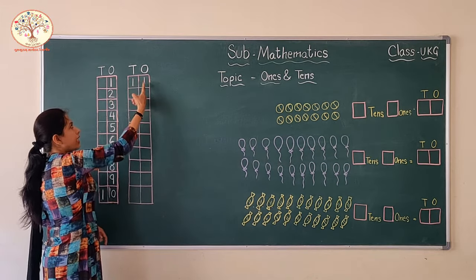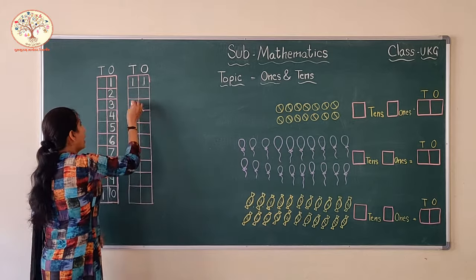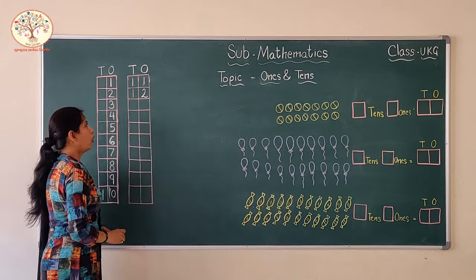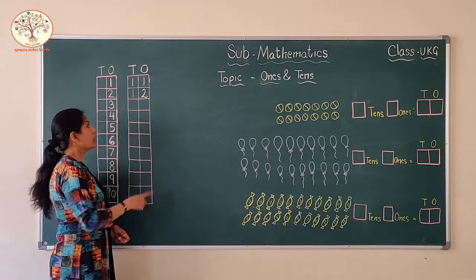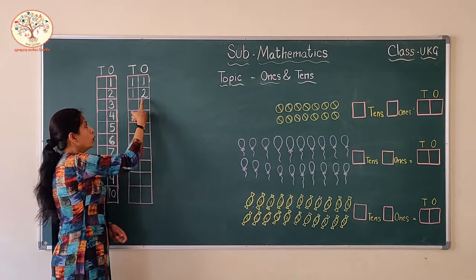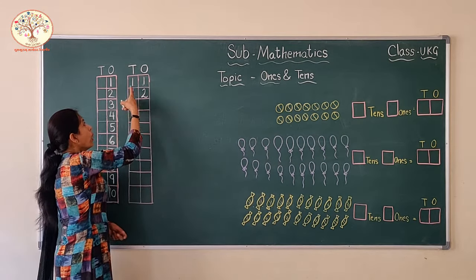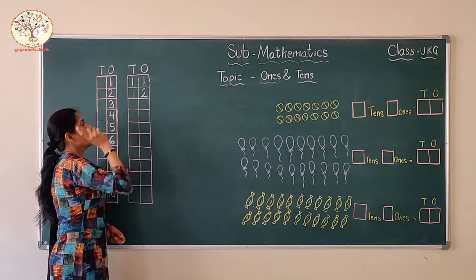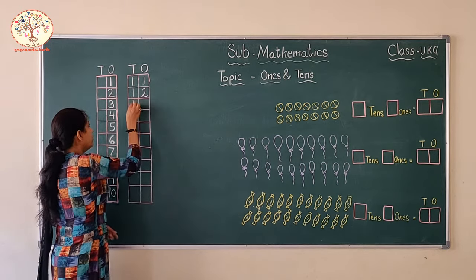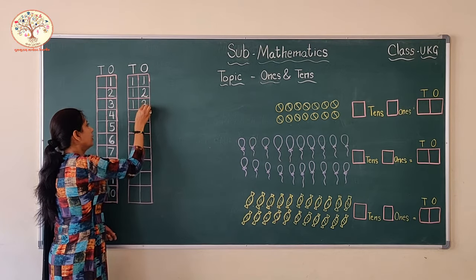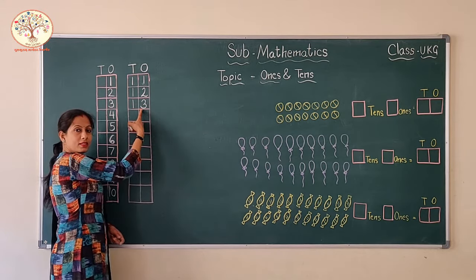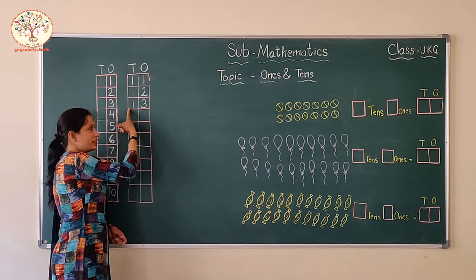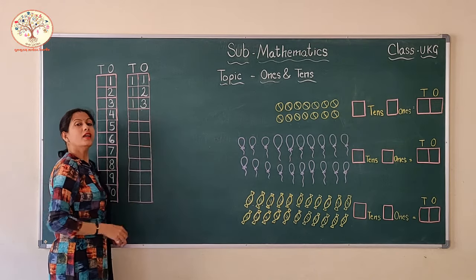So for 11: 1 ten and 1 one. After 11 comes 12. How many 1s here? 2 — that's 2 ones. And how many 10s? 1 ten. So: 1 ten and 2 ones — 12. Then 13. How many ones? 3 ones. And how many 10s? 1 ten. So 1 ten and 3 ones — 13.